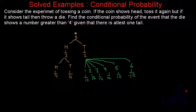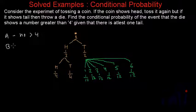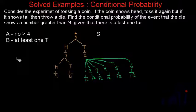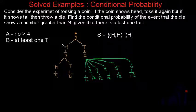Now, what we have to find? We have to find the conditional probability of the event that the die shows a number greater than 4, given that there is at least one tail. So let us define two events: Event A as getting a number more than 4, and Event B as getting at least one tail. The solution space S will include: getting two heads, and getting one head and one tail.